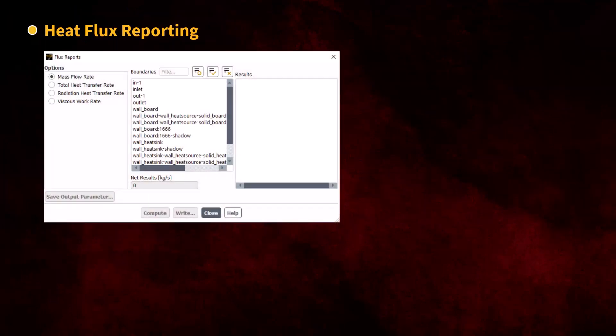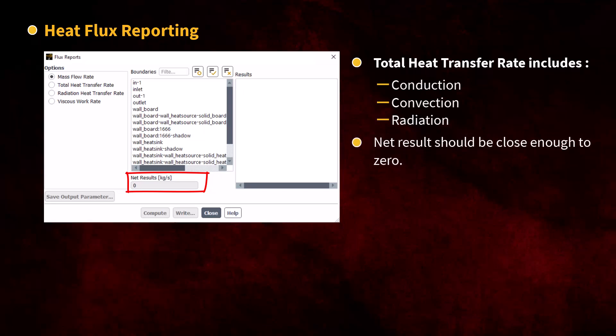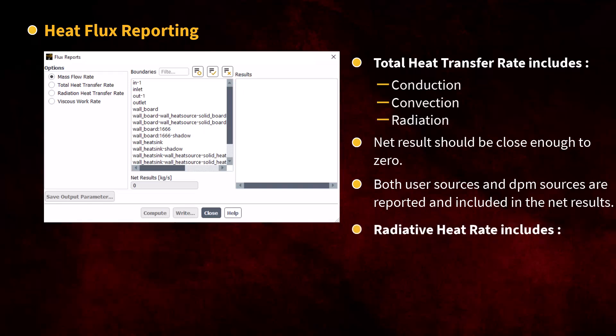Now I want to briefly discuss heat flux reporting in Fluent. In the Flux Reports panel, there are two options related to heat transfer: total heat transfer rate and radiation heat transfer rate. Total heat transfer rate includes all fluxes—conduction, convection, and radiation—and therefore the net results should be zero, or more precisely, close enough to zero. Both user sources, like you defined from a cell zone conditions panel, and DPM sources are reported in this panel and included in net results. Radiation heat transfer rate only reports the net radiative flux, and in general, its sum should not be zero, because radiation can be absorbed by the media in the domain.